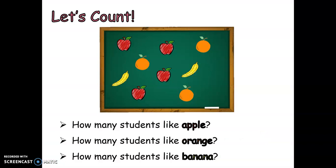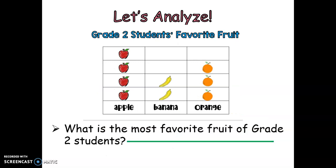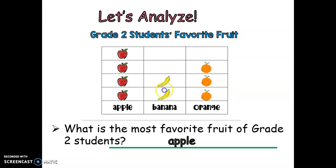Let's count how many students like apple, how many students like orange, and how many students like banana. Now let's draw. These are the grade 2 students' favorite fruit. Four of them drew apples, two of them drew banana, and three of them drew orange. Now let's analyze. What is the most favorite fruit of grade 2 students by just looking at our pictograph? Apple is the most favorite fruit of grade 2 students because four of them drew it in our pictograph.